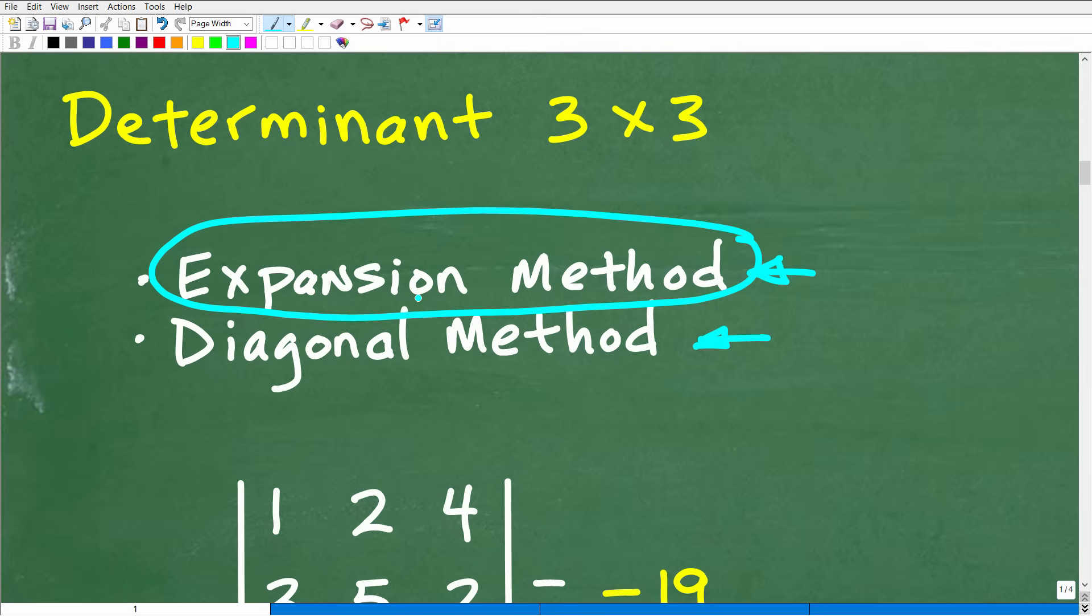It's probably the main method that your teacher might teach you. However, I would say the expansion method with a three by three, for me personally, is a little bit more involved. I love this diagonal method when calculating the determinant of a three by three.